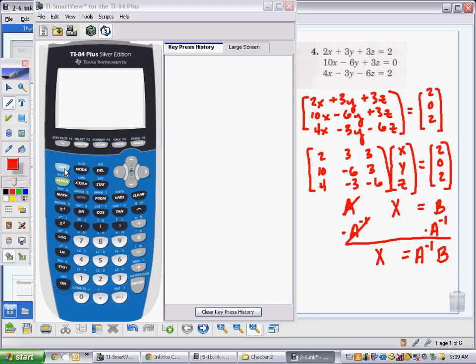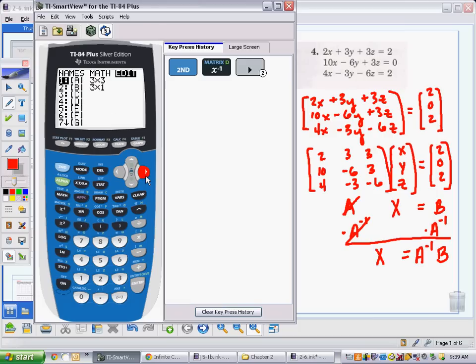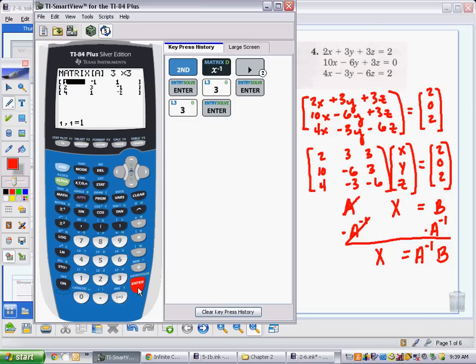So, let's go ahead in my graphing calculator, I'm going to enter in matrix A and matrix B. To do so, we go to second matrix, which is the X to the negative one key. I move to the right over to edit, and matrix A is the one I want to use, so I'll press enter. This is a three by three matrix, so I write in three, enter, three, enter, and now I enter in the elements of that matrix.